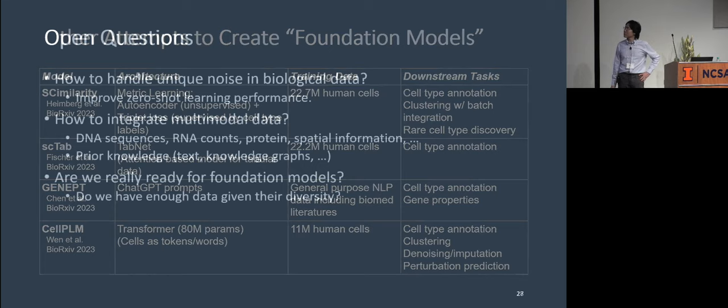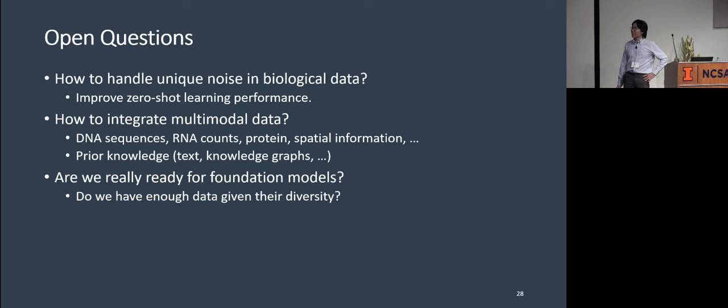There are some open questions we are really interested in. The first one is how to actually handle the unique noise in biological data, including the batch effect I just talked about. And we also need to improve the zero-shot learning performance. That's especially important for batch effect because every new dataset will be a new batch. And if we want to study it, we need the zero-shot performance on it to be good. And we also need to know how to integrate multi-model data. So I talked about DNA sequences. I talked about RNA counts. There are also proteins and spatial informations, and those can all be measured for each single cell. And how do we integrate all this information together? Beyond that, we also have a lot of prior knowledge that are documented in millions of biomedical publications. Also, there are established knowledge graphs or databases for the interaction of genes, interaction of cells. How do we utilize all those information in a unified model?